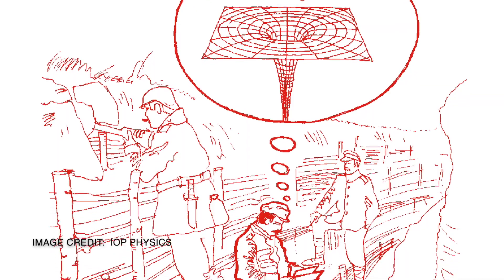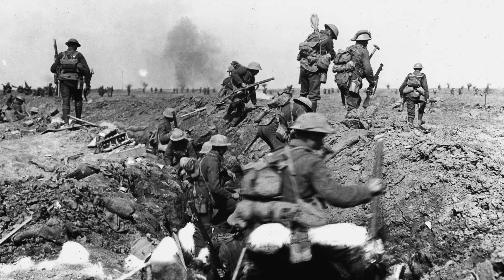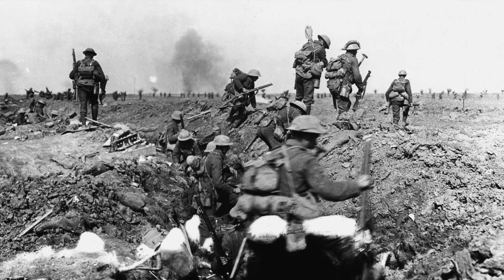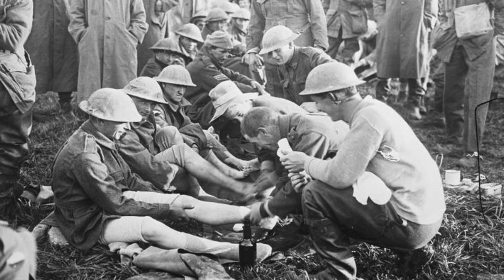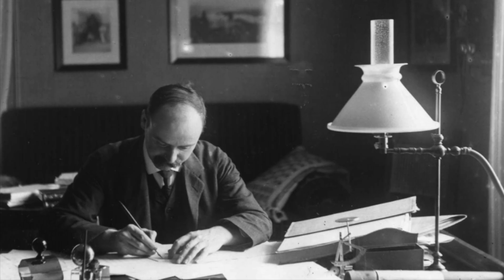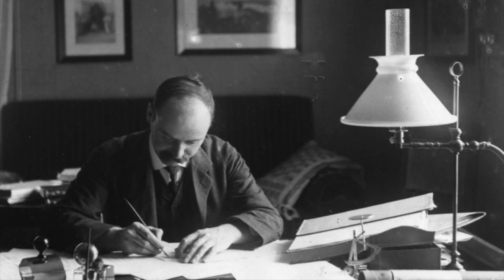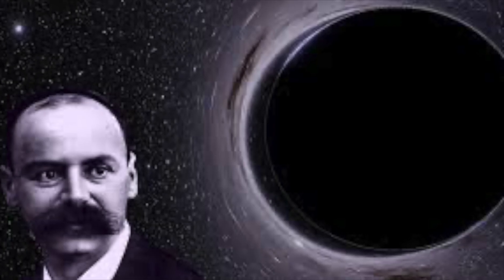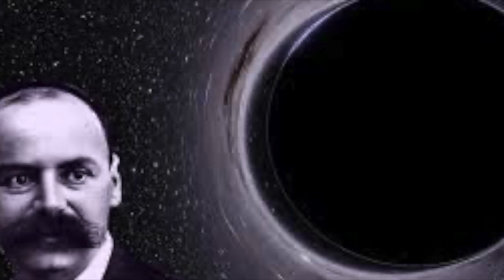Schwarzschild continued working on his solution, even in the trenches, carrying his notebooks with him. However, in the harsh conditions of World War I, he fell ill with a rare and painful autoimmune disease known as pemphigus. This condition caused severe blistering of the skin, and at the time, it was untreatable. But despite his declining health, he kept writing and refining his work, until he could no longer hold a pen. He continued being troubled by what his results meant, and thought that the singularity must be a sign of cosmic doom.